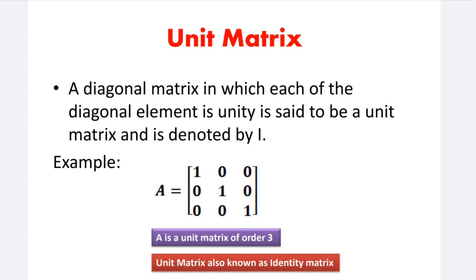A unit matrix: a matrix in which each of the diagonal elements is unity is said to be a unit matrix, and is denoted by I. The diagonal elements are 1, 1, 1. This diagonal element defines the unit matrix.